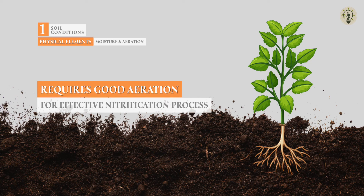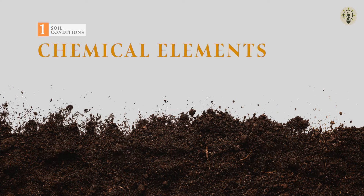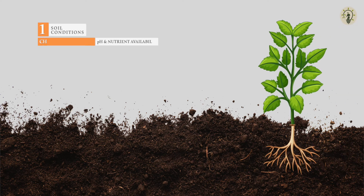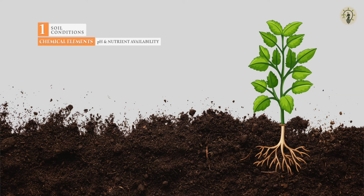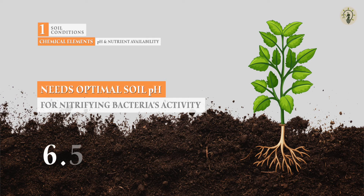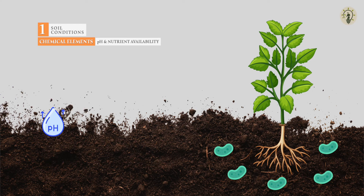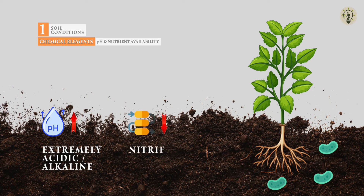Good soil aeration is very important as nitrifying bacteria need oxygen to carry out the nitrification process. The soil's chemical conditions comprise its pH and nutrient availability. Nitrification requires an optimal soil pH between 6.5 and 7.5 for the activity of nitrifying bacteria to be successful. If the soil's pH is extremely acidic or extremely alkaline, the activity of nitrifying bacteria is inhibited and the nitrification process slows down or stops completely.